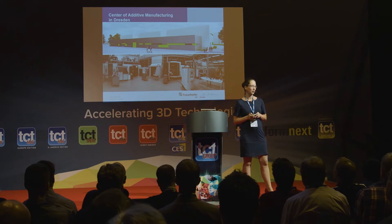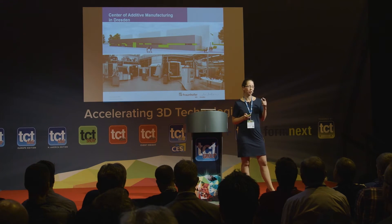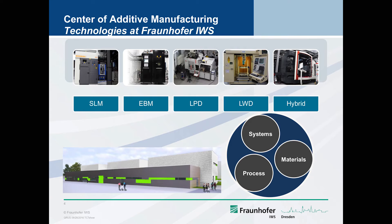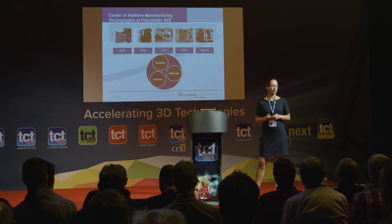We started with surface cladding, saw the potential for additive manufacturing, and began looking into other AM processes for metals especially. I'm proud to show our center of additive manufacturing in Dresden, where we combine many different AM processes — selective laser melting, electron beam melting, laser powder deposition, laser wire deposition, and hybrid machines. We look at the processes themselves, the materials, and systems technology to monitor the process and understand the mechanisms behind it.